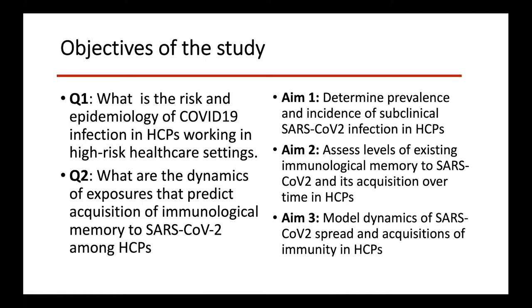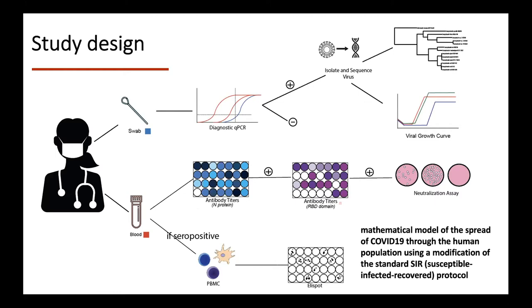Our study design is a longitudinal study. We are aiming to recruit between 100 and 200 healthcare workers who are working on the COVID-19 wards, the ICU, and the emergency department. Once these subjects are recruited, we are hoping to collect both nasopharyngeal swabs as well as blood samples longitudinally for the first six months.